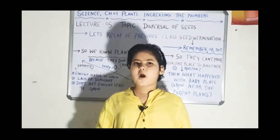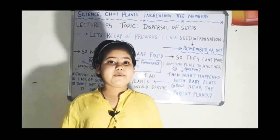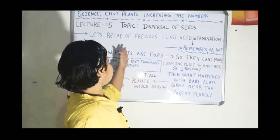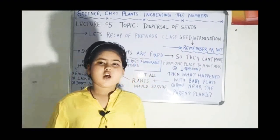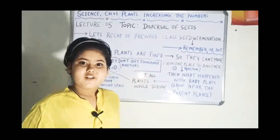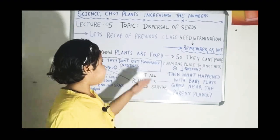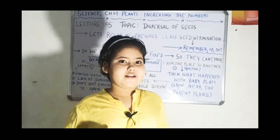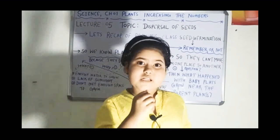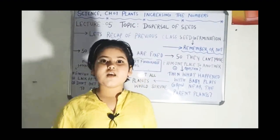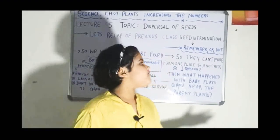Before getting into today's topic, I would like to do a recap of our previous lecture. In our previous lecture, we learned about seed germination. Seed germination is a process of developing a new plant from a seed, and that new plant is known as a baby plant or a seedling. For better understanding of seed germination, you can watch my previous lecture.